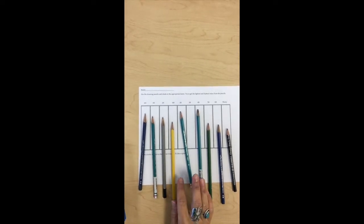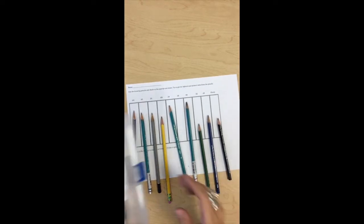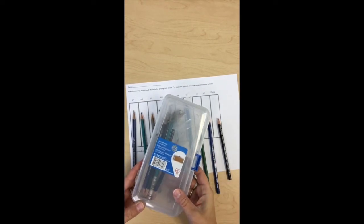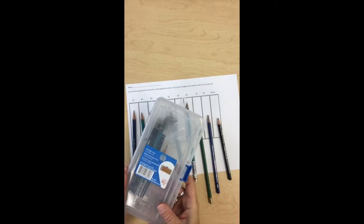Welcome back. The next step is to try the different graphite pencils that I have for you. I have containers that look like this. They're in the bottom of the eighth grade materials cabinet. There should be one of each one of these pencils.